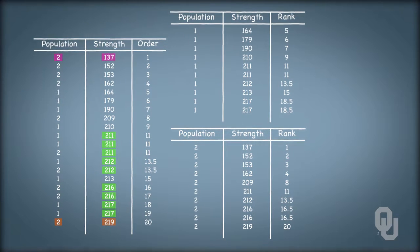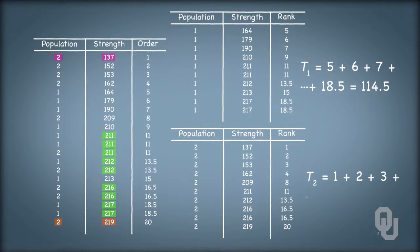The sum of the ranks for population one, we call this value T1, is 114.5. The sum of ranks for population two, or T2, is 95.5.